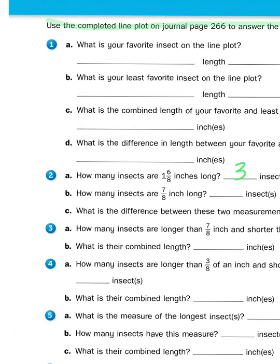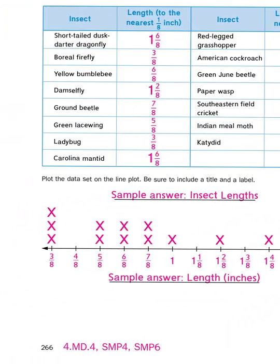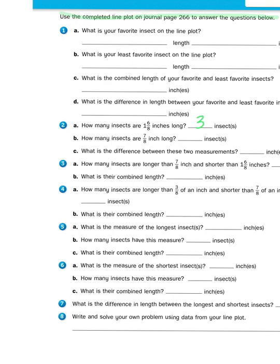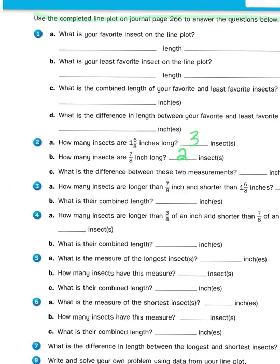Now how many insects are seven eighths inches long? Well again, as I consult the table, I see that there are two. Looks like it's the ground beetle and the southeastern field cricket. So that's pretty straightforward. All I'm doing is looking at a chart and plotting in the information.